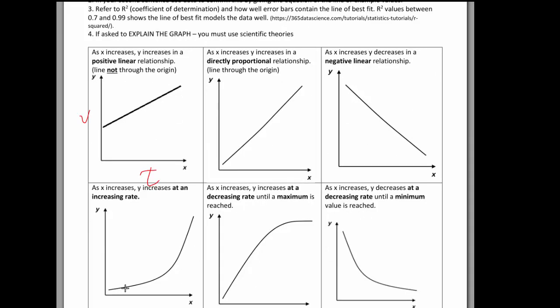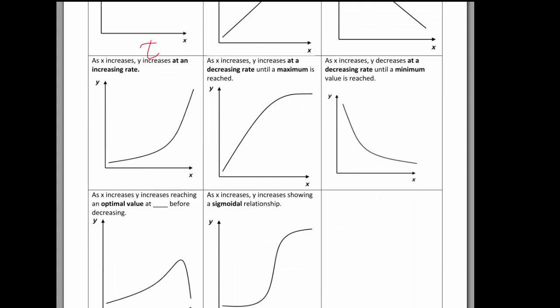If you have a curve like this, you say it increases at an increasing rate. If it curves and then reaches a maximum, you say it increases at a decreasing rate until the maximum is reached. If it decreases like this, you say it's decreasing at a decreasing rate until the minimum is reached.